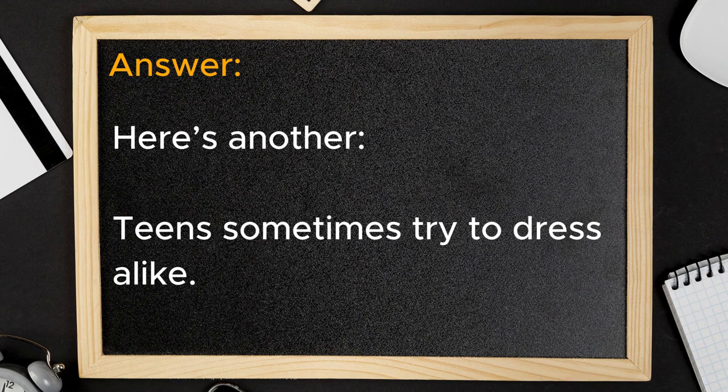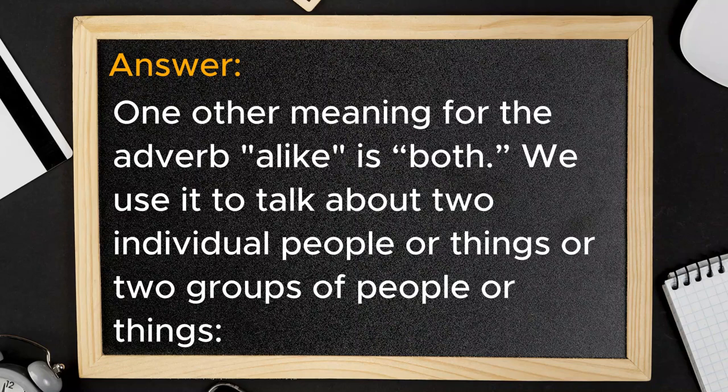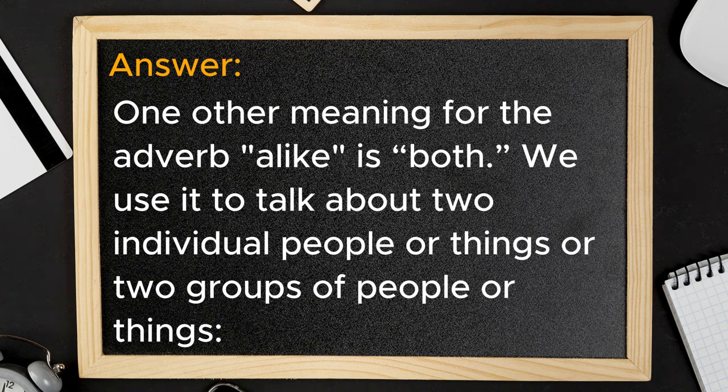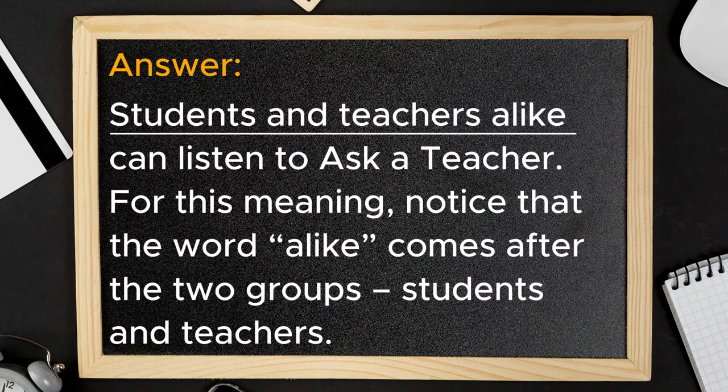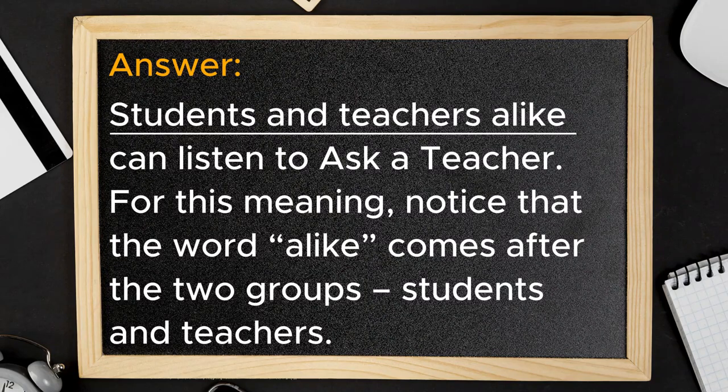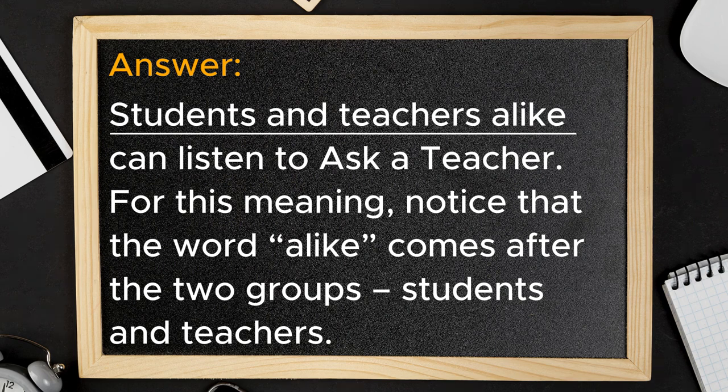One other meaning for the adverb alike is both. We use it to talk about two individual people or things or two groups of people or things. Students and teachers alike can listen to Ask a Teacher. For this meaning, notice that the word alike comes after the two groups, students and teachers.